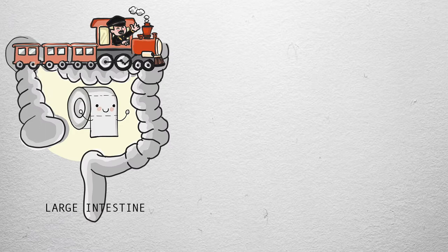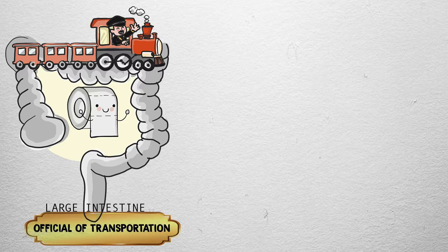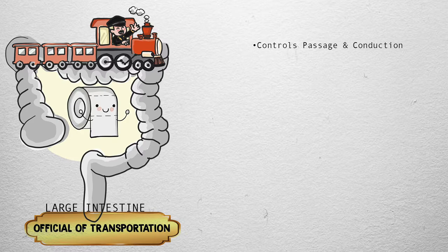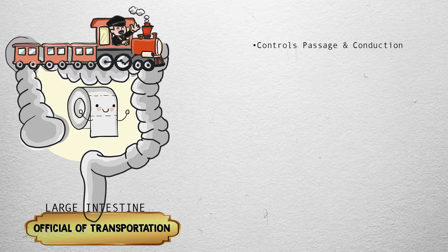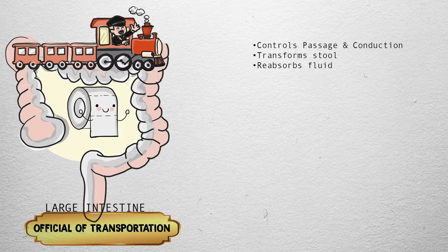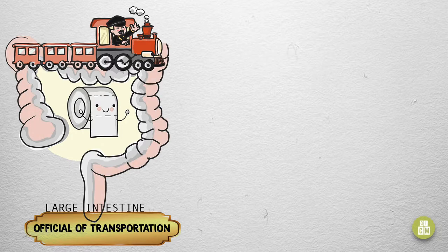All aboard! The large intestine is known as the official of transportation. It controls passage and conduction like an idyllic journey on an old-time locomotive. Our large intestine train conductor is granting passage to travelers. Notice that roll of ultra-absorbent toilet paper? It's there because the large intestine has the function of transforming stool and reabsorbing fluid.